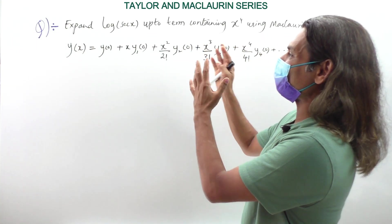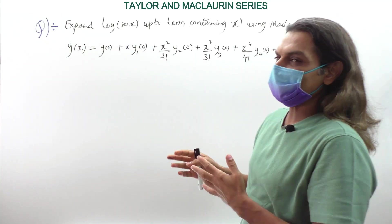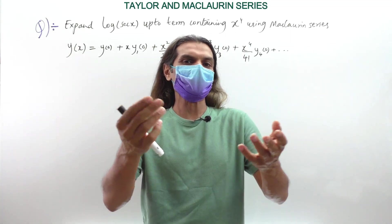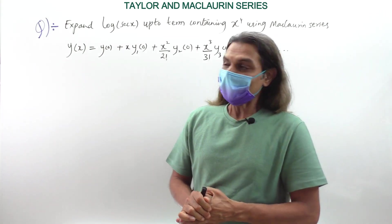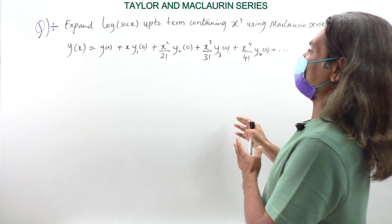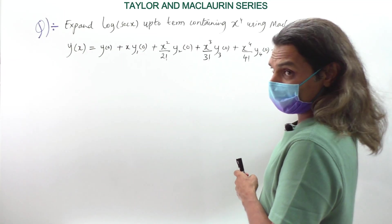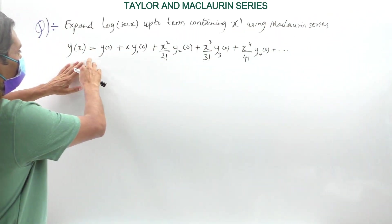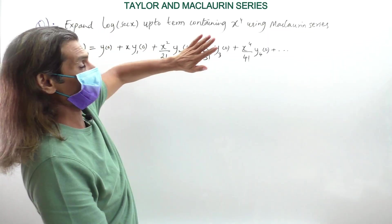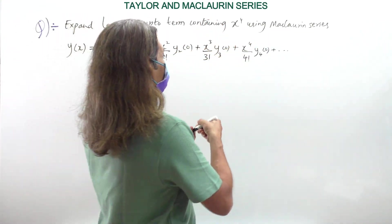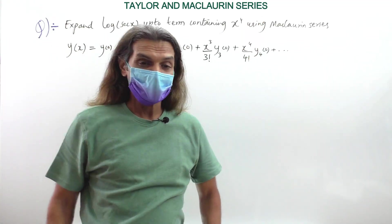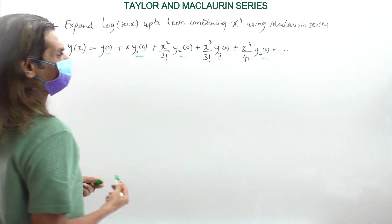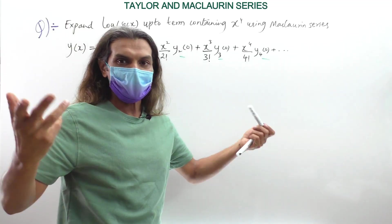The next question is an examination favorite. This question has been asked multiple times in the final exam question paper, and may appear in upcoming exams too, so practice this perfectly. The question is: expand y = log(sec x) up to the term containing x⁴ using Maclaurin series. Since the term is x⁴, we write the series: y(x) = y(0) + x·y₁(0) + x²/2!·y₂(0) + x³/3!·y₃(0) + x⁴/4!·y₄(0). We need to find y(0), y₁(0), y₂(0), y₃(0), and y₄(0).